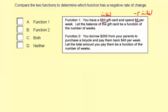Function 2, you borrow $200 from your parents to purchase a bicycle, then pay them back $40 per week. Let the total amount you pay them be a function of the number of weeks.